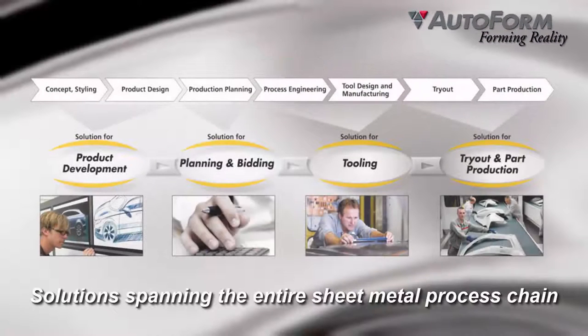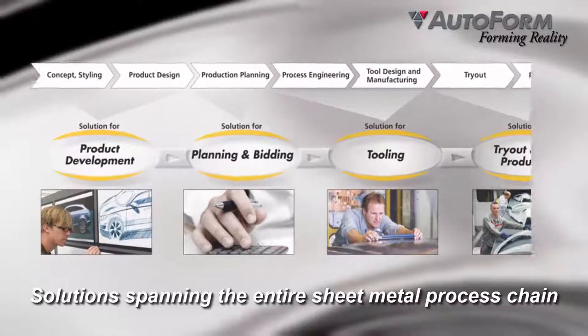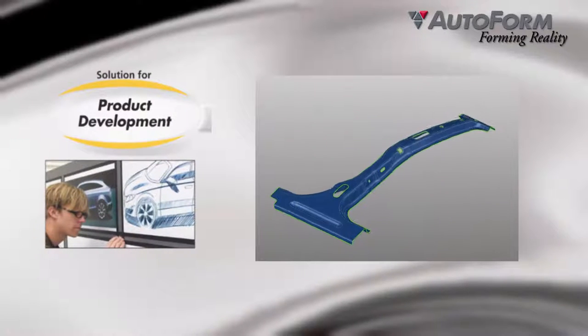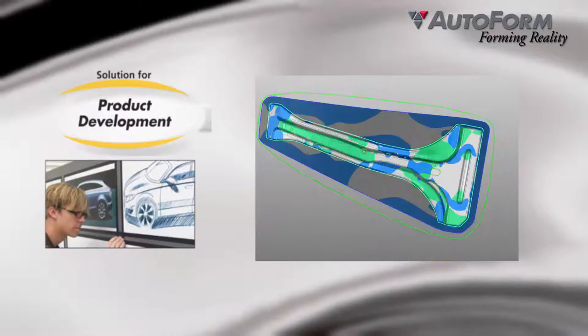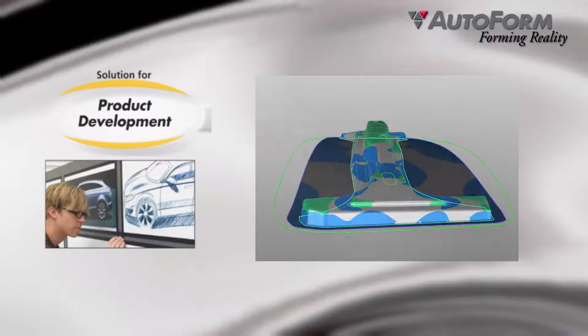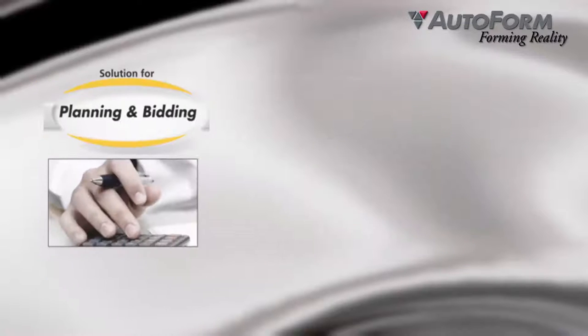AutoForm software solution spanning the entire sheet metal process chain. AutoForm solution for product development enables product designers to predict initial design formability, evaluate feasibility of proposed product changes, and estimate material costs of their standard products.